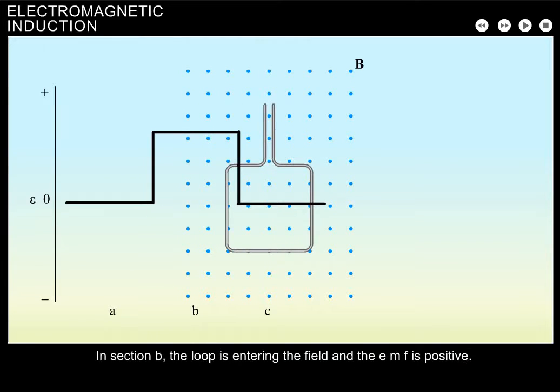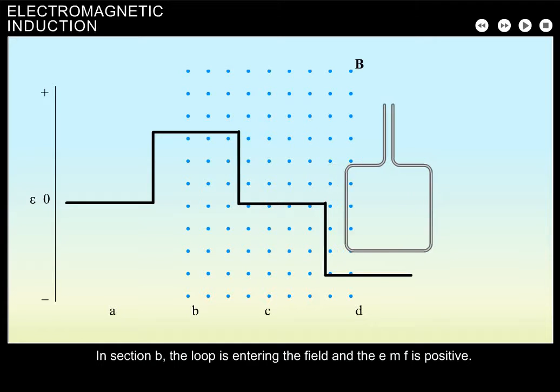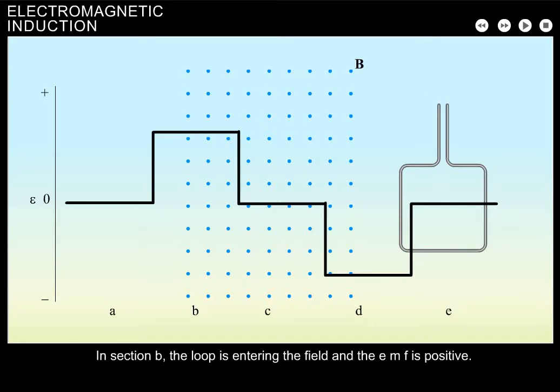In section B, the loop is entering the field, and the EMF is positive. In section D, the loop is exiting the field, and the EMF is negative. The EMF is zero when the loop is entirely out of or in the field.